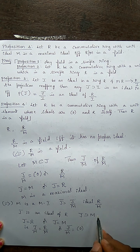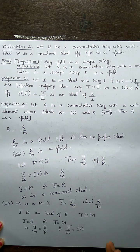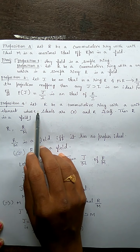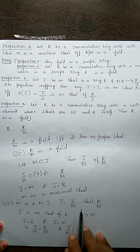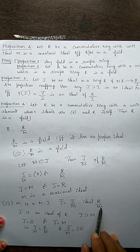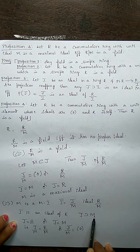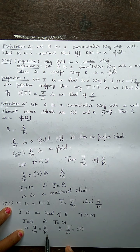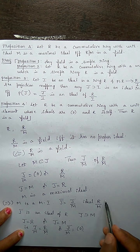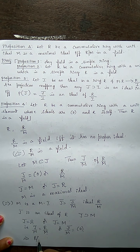So the only ideals of R by M are either 0 or R by M itself. That means R by M has no proper ideals, and by proposition 4 we can conclude that R by M is a field. Therefore, M is a maximal ideal if and only if R by M is a field.